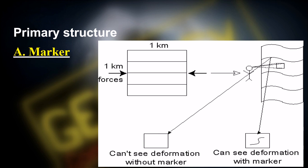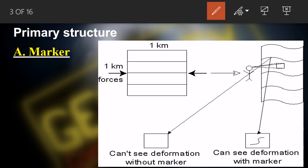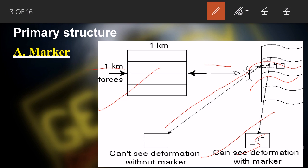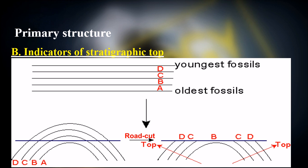Primary structures have markers that help us determine the type of deformation. If a rock has a marker, we can identify what deformation has taken place. Without a marker, we cannot determine whether deformation occurred at all. So markers are very important, and we study primary structures to interpret the geometry of secondary structures.